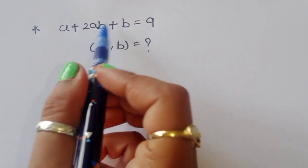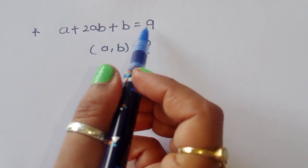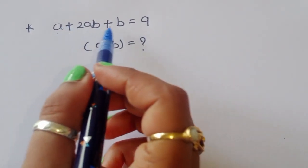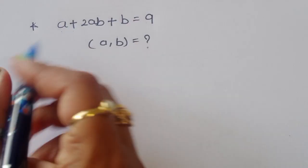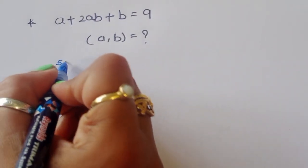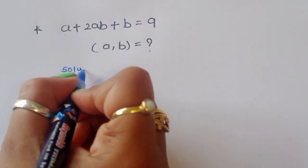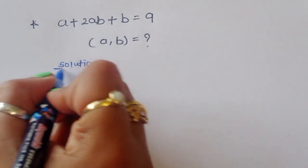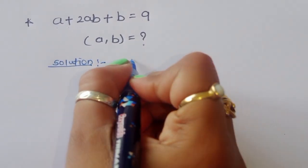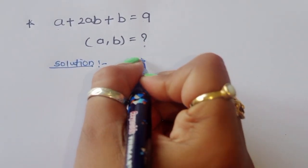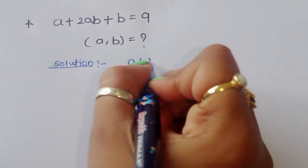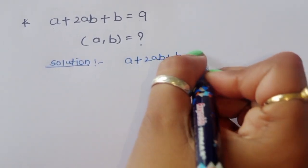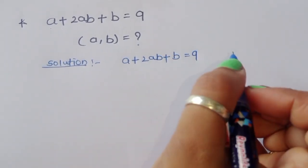We are given a plus 2ab plus b is equal to 9. We have to find out the value of a and b. Let's see the solution. a plus 2ab plus b is equal to 9.